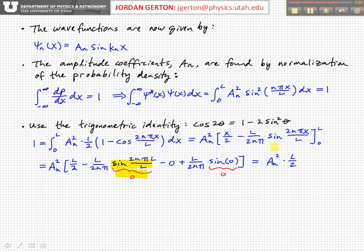Then you evaluate x over 2 at 0, you get 0, and then you evaluate sine of 2 n pi x over L at 0, that's sine of 0, and that's again equal to 0. So what you end up with is just the first term, L over 2.